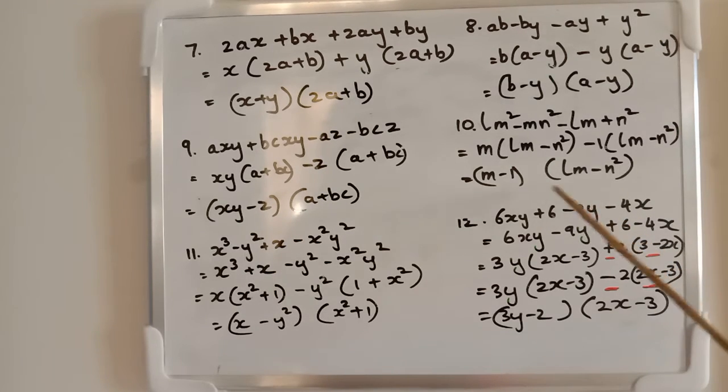We have to group similar x's and y's together here. So one of these has to go here. Right? So what am I doing? I am going to keep 6xy - 9y + 6 - 4x.